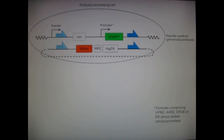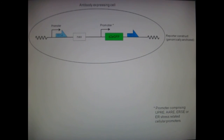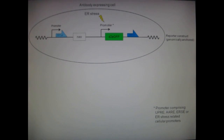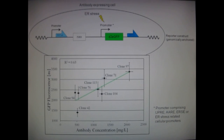In this way, we found that overexpression of a recombinant antibody results in an increased activity of the GRP78 promoter. Interestingly, a strong correlation between the amount of the secreted antibody and its activity was observed.